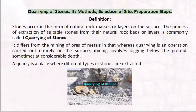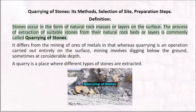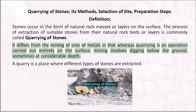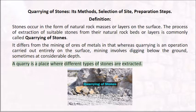Quarrying of stones — its methods, selection of site, and preparation steps. Definition: Stones occur in the form of natural rock masses or layers on the surface. The process of extraction of suitable stones from their natural rock beds or layers is commonly called quarrying of stones. It differs from mining of ores of metals in that quarrying is an operation carried out entirely on the surface, while mining involves digging below the ground, sometimes at considerable depth. A quarry is a place where different types of stones are extracted.